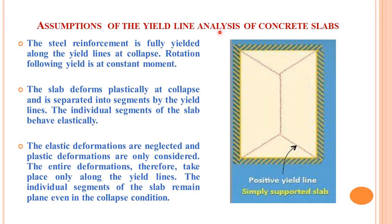In the assumptions of E-Line Analysis, the first assumption states that the reinforcement yields along the E-Line that is formed during the collapsed stage. The second assumption states that the slab is divided into different segments when it collapses completely, with the E-Lines dividing the single slab into those segments.